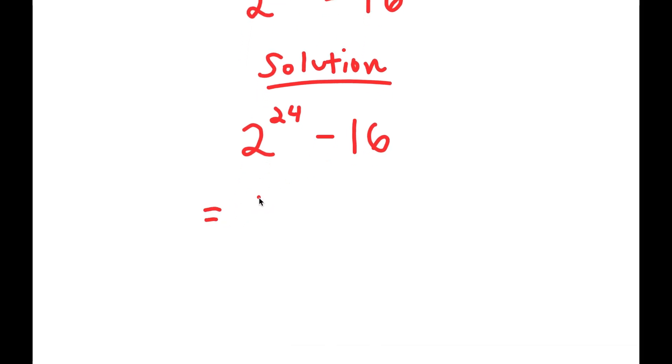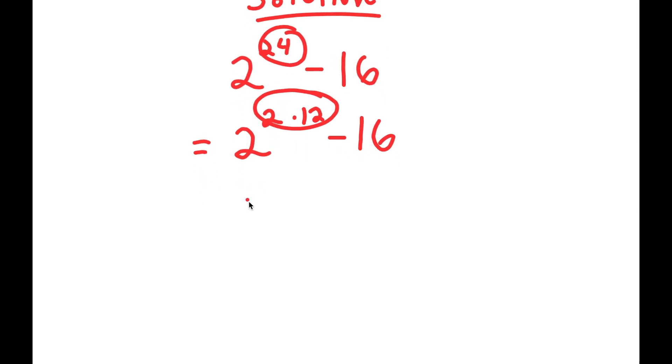And this is the same thing as 2 to the power of 2 times 12 minus 16. So all I did was I rewrote 24 as 2 times 12 in my exponent. Now, if I have something in the form a to the power of m times n, this is equal to a to the power of m to the power of n.